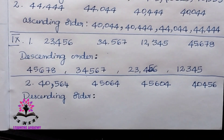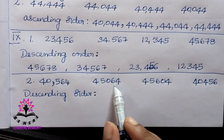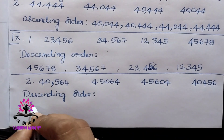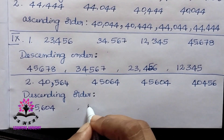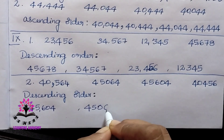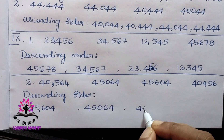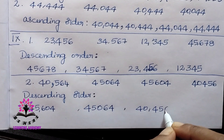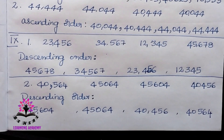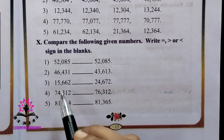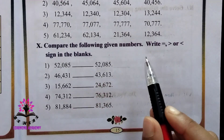Write the next set in descending order. The bigger number first: 45,604 — then 40,654 — then 40,564 — then 40,456.